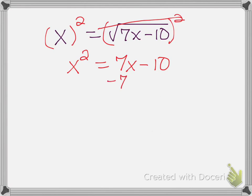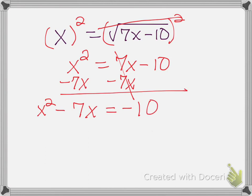So the opposite of positive 7x is negative 7x. x squared and negative 7x are not like terms so I'll just write it out. Now it still doesn't equal zero because I still have a negative 10 over there, so to get rid of that negative 10, I have to do the opposite. The opposite of negative 10 is adding 10, so I'm going to add 10 to both sides.